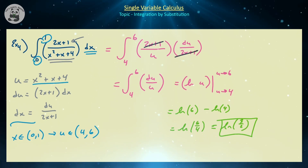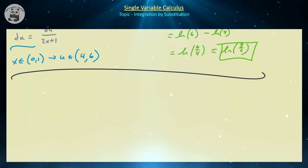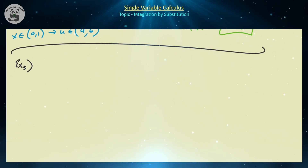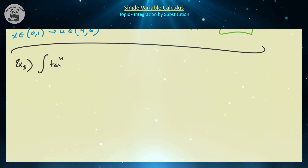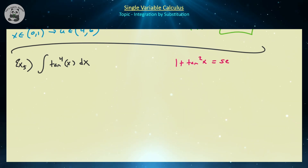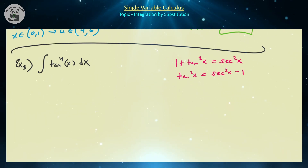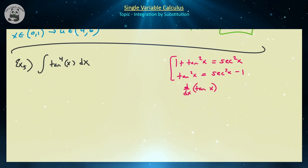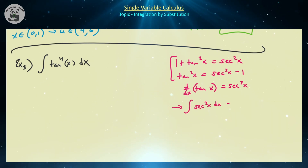Let's do one more example involving trig identities, which can be trickier to handle. We'll do the integral of tan⁴(x) dx. Key identities: 1 plus tan²x equals sec²x, so tan²x equals sec²x minus 1. The calculus tool connecting these is that the derivative of tangent is sec², meaning the integral of sec²x dx equals tan x plus c.